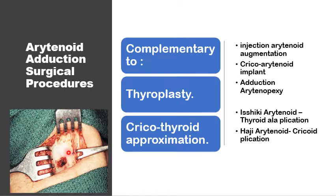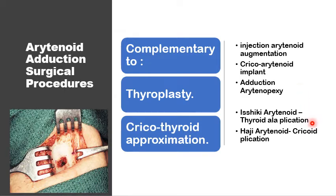These types of procedures can sometimes be complementary to other operations like thyroplasty or cricothyroid approximation, and include things like injection, augmentation of the arytenoid cartilage, cricoarytenoid implant, adduction, arytenopexy, and arytenoid thyroid ala placation — either the original description by Shiki or the modification by Haji to placate the arytenoid and the cricoid cartilage.